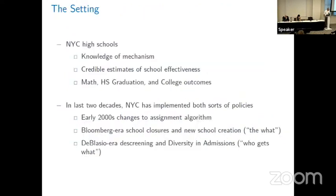The setting is New York City. We like this setting because it's the largest district in the US, we have credible estimates of school effectiveness, and I'll be talking about math, high school graduation, and college outcomes. In New York, there has been a version of this debate in the last two decades. In the early 2000s there was a big change to the assignment system with the adoption of deferred acceptance in the Bloomberg era.